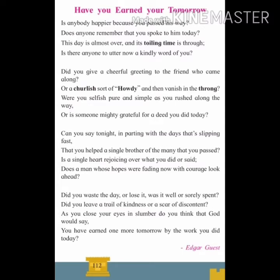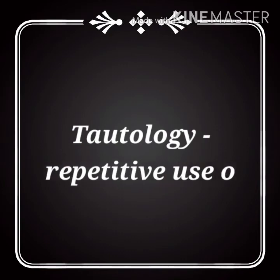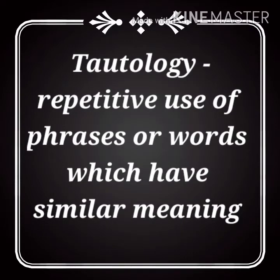The next figure of speech is tautology. Tautology means repetitive use of phrases or words which have similar meanings. In simple words, expressing the same thing or idea two or more times means tautology. Expressing the same thing in different words also means tautology. Poets or writers purposely use this figure of speech to add some effect or to bring the attention of the readers.